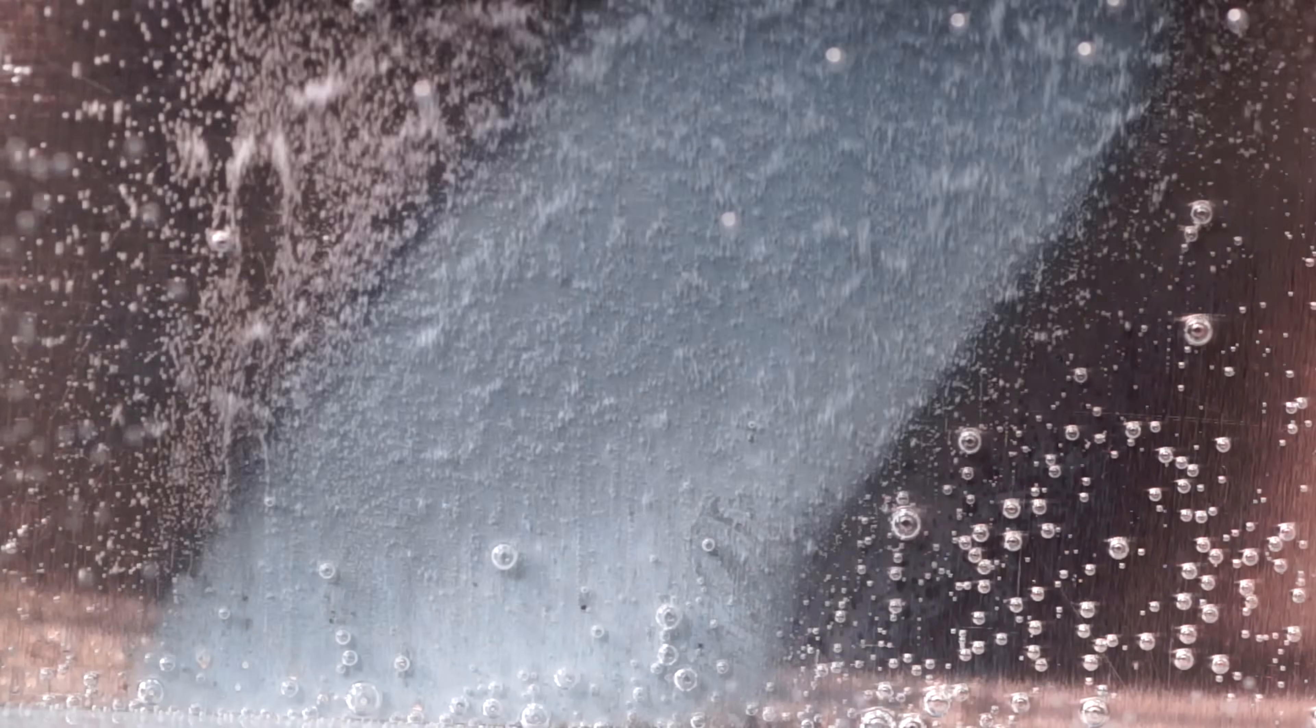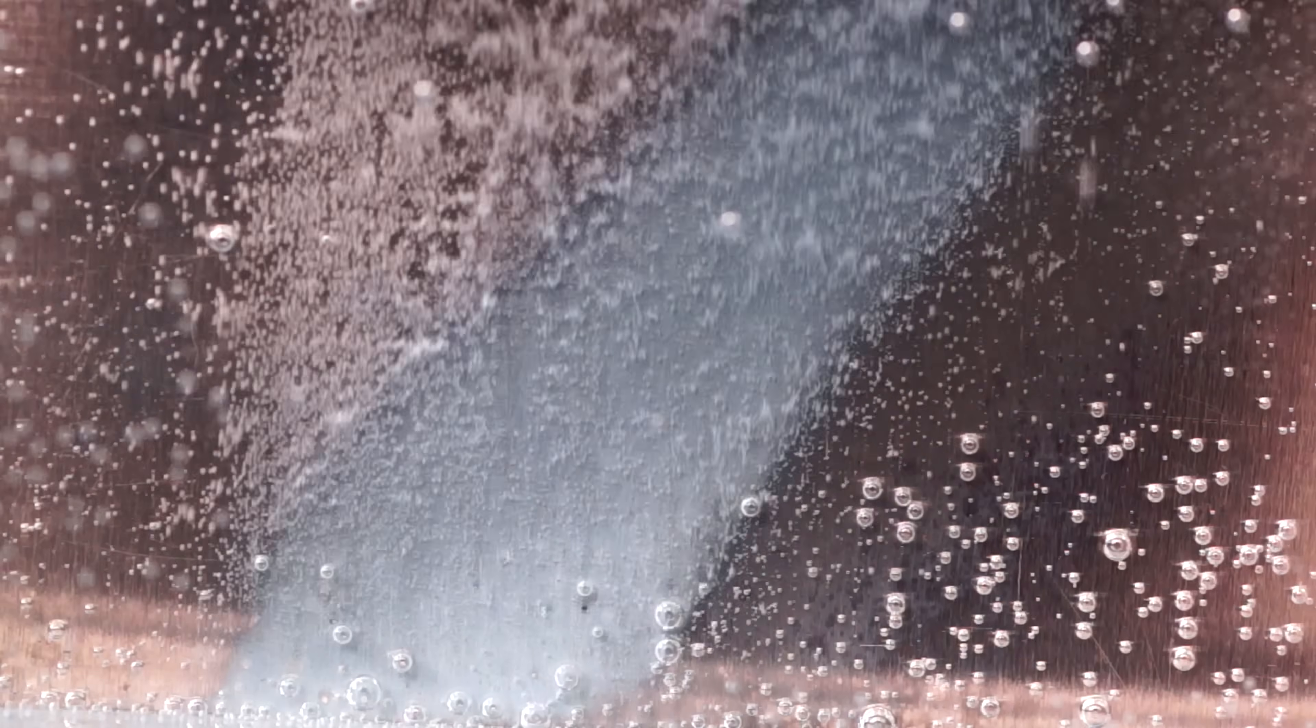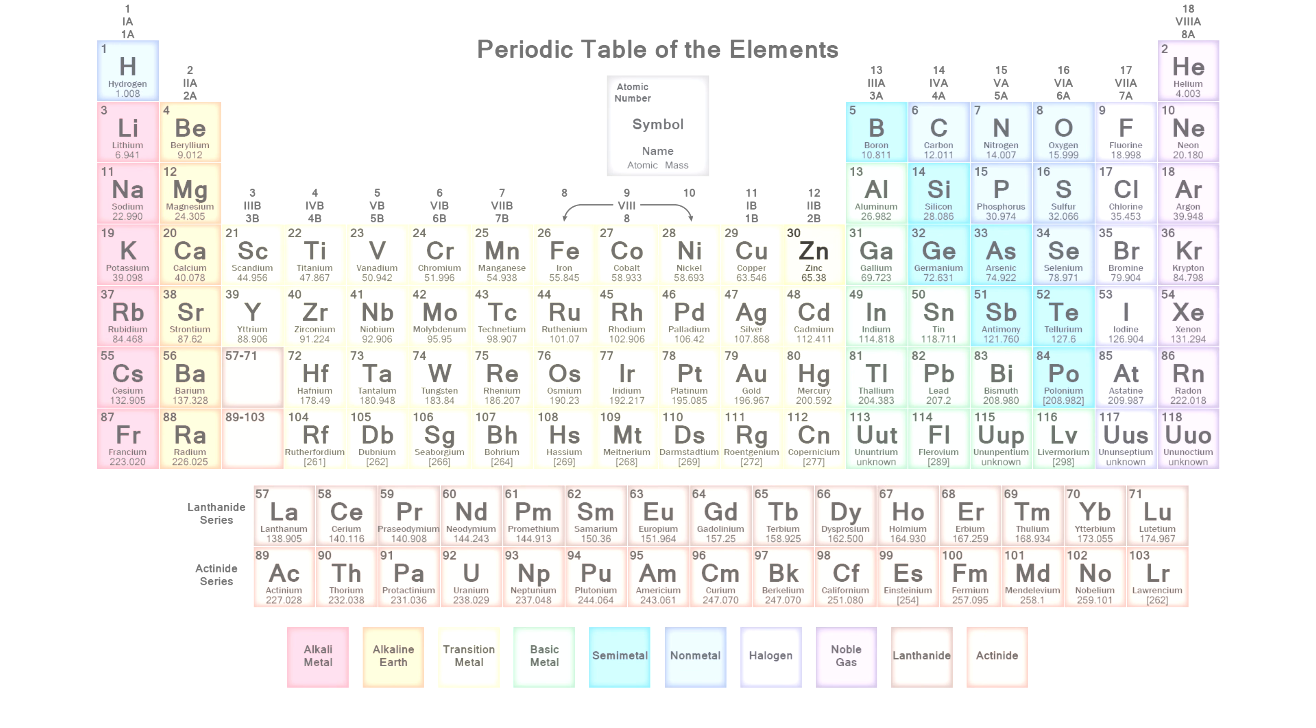Today I am going to tell you about such a metal as zinc. Zinc is one of the transition metals belonging to group 12 of the periodic table of chemical elements.